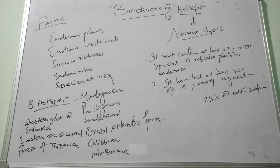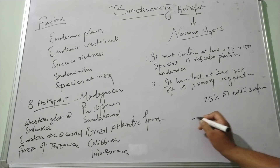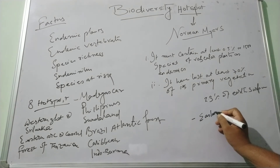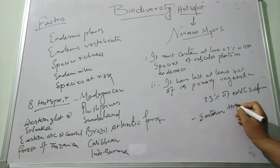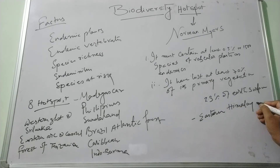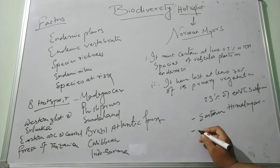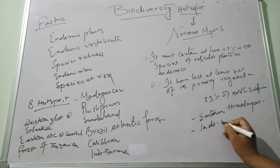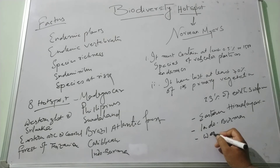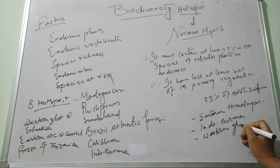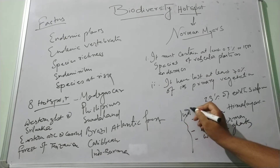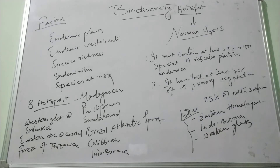In India, there are three major hotspot regions found: the Eastern Himalayas, the Western Ghats, and the Indo-Burma region. These are the three major hotspots found in India.